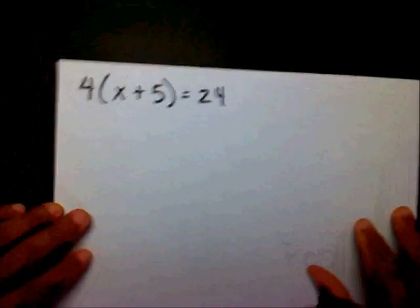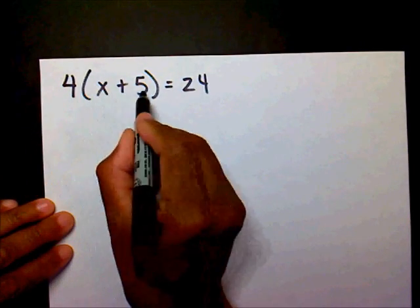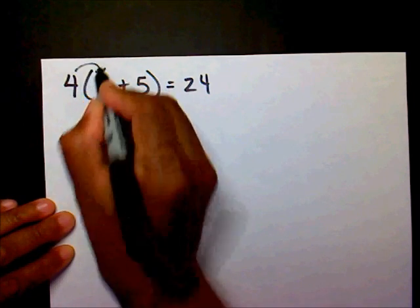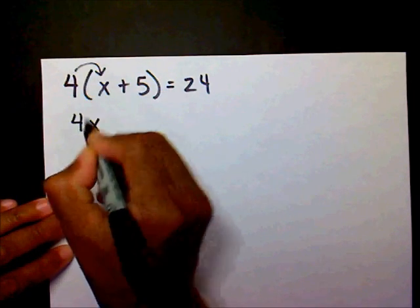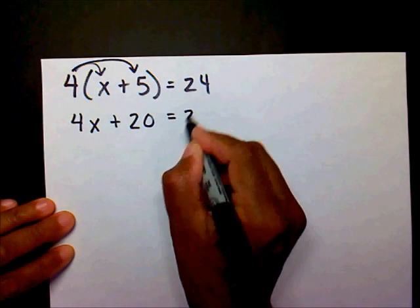Our first problem is 4 times x plus 5 equals 24. I'm going to multiply my 4 times my x, which is 4x, then I'm going to multiply my 4 times 5, which is 20, equals 24.